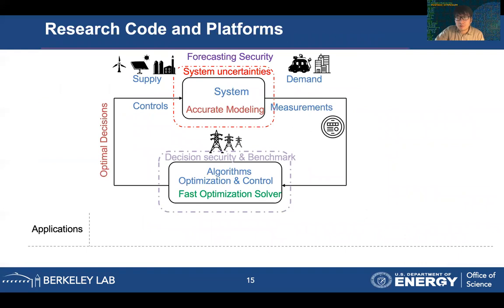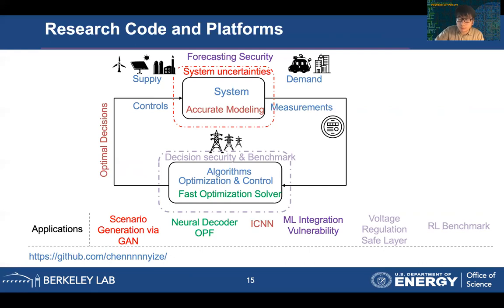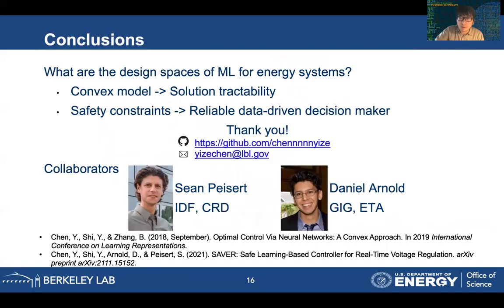So far in this talk, we have been looking into the security and reliability concerns when integrating machine learning into real engineering systems. The knowledge and experience gained from power and energy systems are not constrained to that specific area — physical knowledge and physical modeling always help you design better machine learning agents. We have proposed different modules, most of which are publicly available on GitHub. I would like to give thanks to my collaborators, and any questions are very welcome. Thank you.